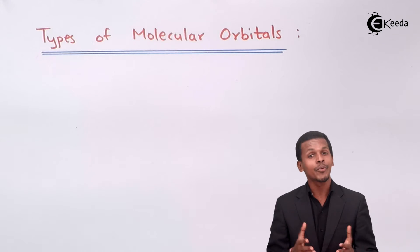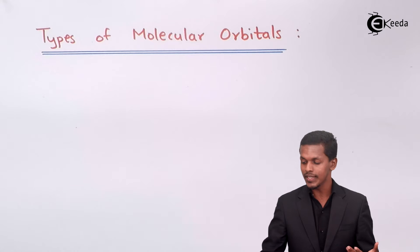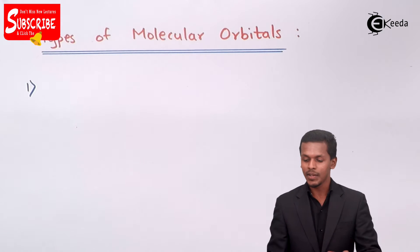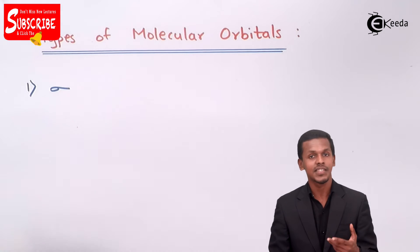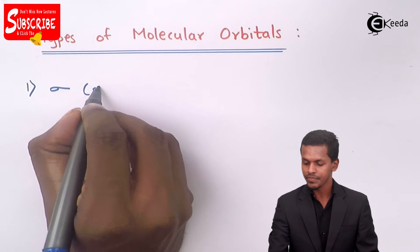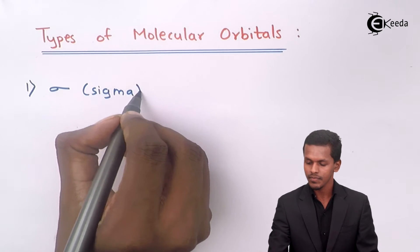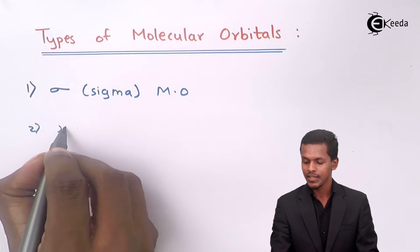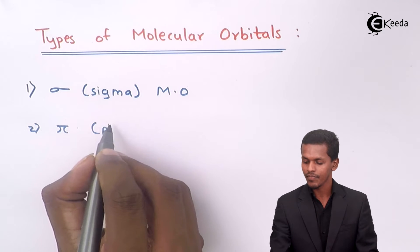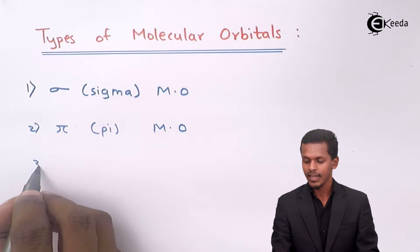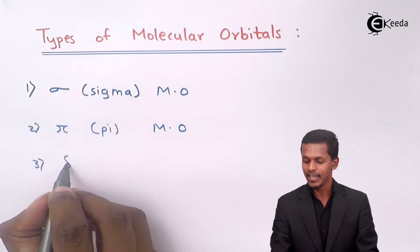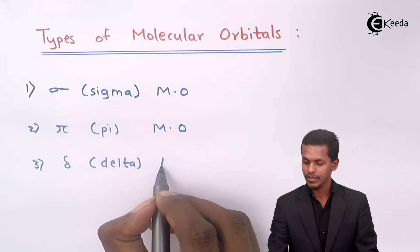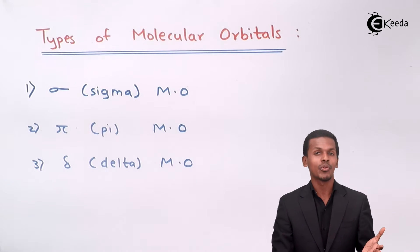Molecular orbitals are of three types basically. The first is sigma molecular orbital, the second is pi molecular orbital, and the last one is delta molecular orbital.